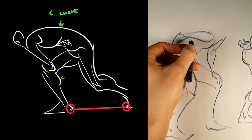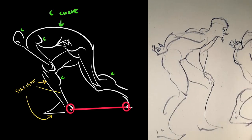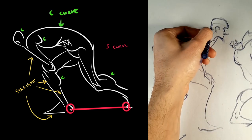So notice how he uses big C shaped and S shaped curves, and he kind of sets those off against really nice, sharp, straight lines.